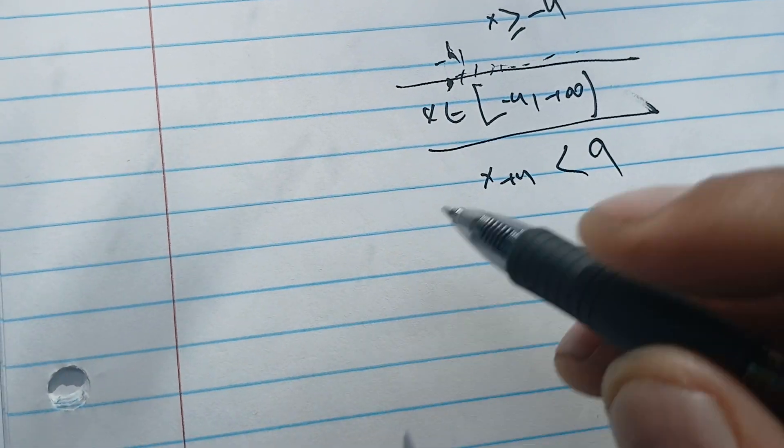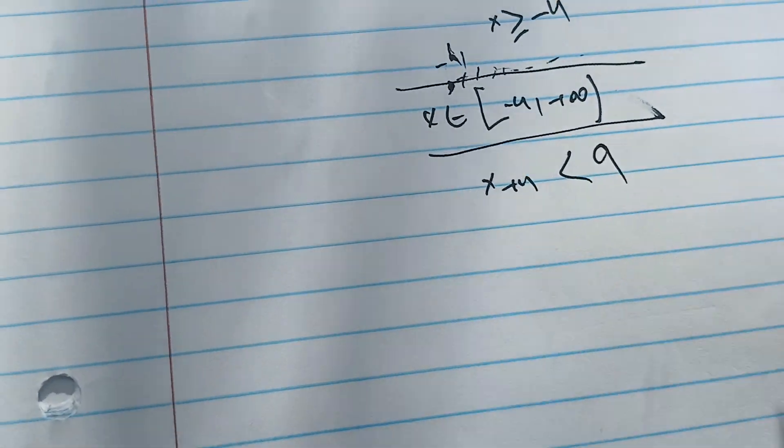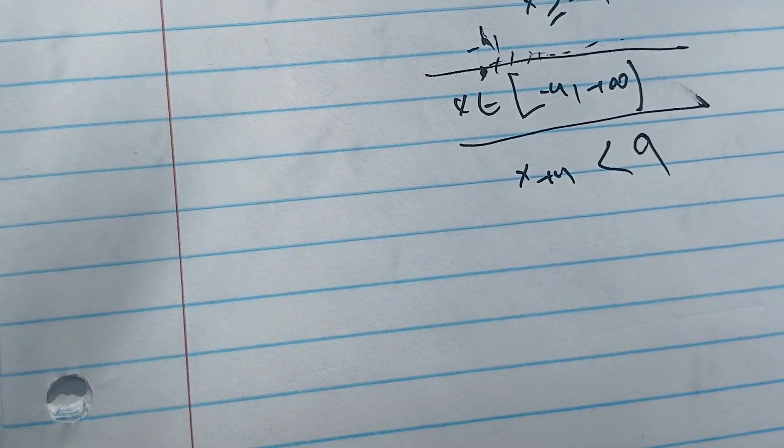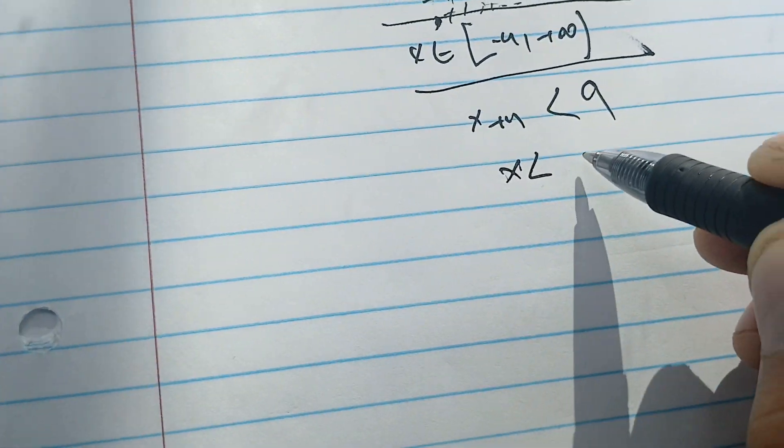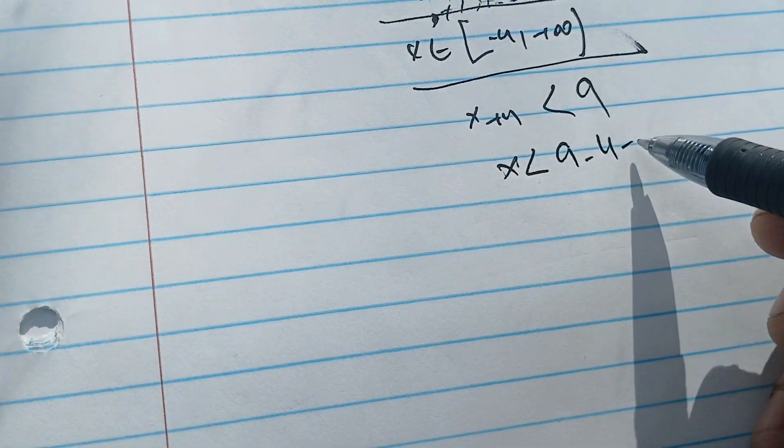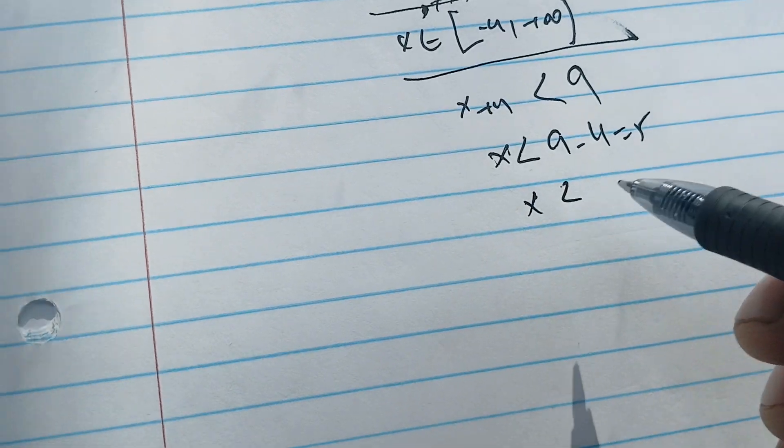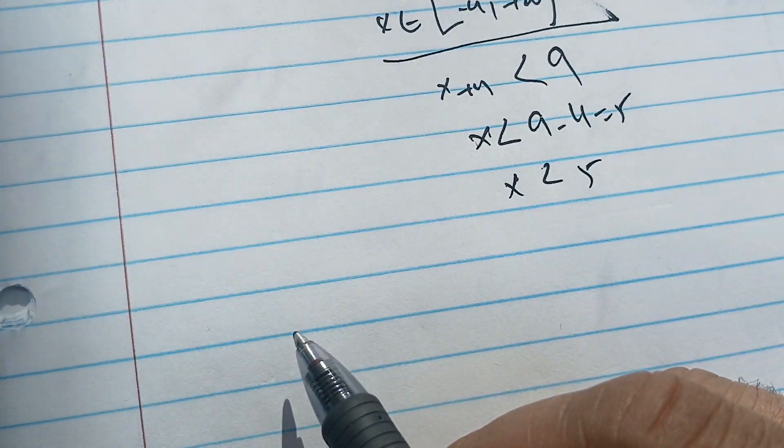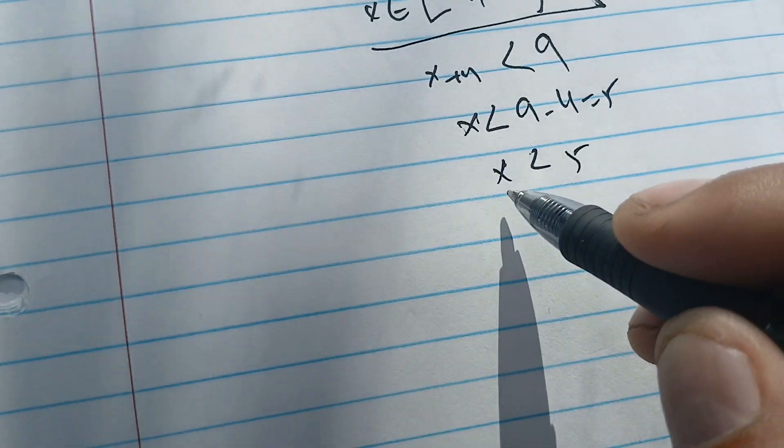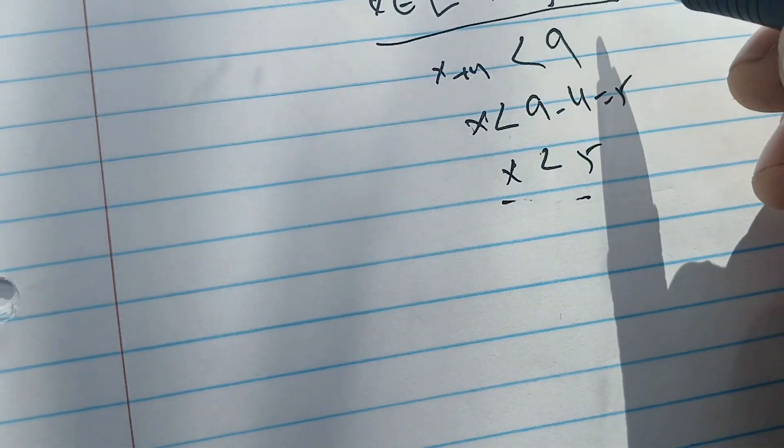So squaring both sides we get x plus 4 is less than 9. We add minus 4 to both sides and we get x is less than 9 minus 4, which is 5. That means x is less than 5.